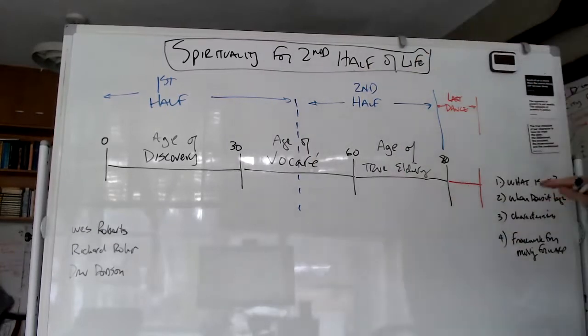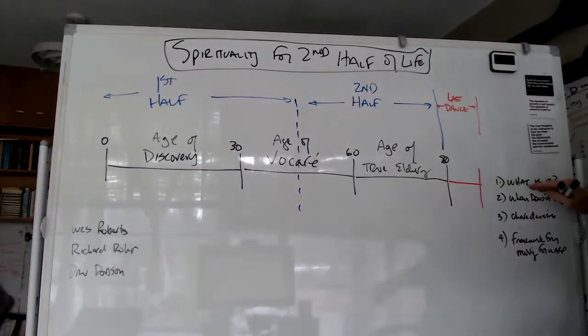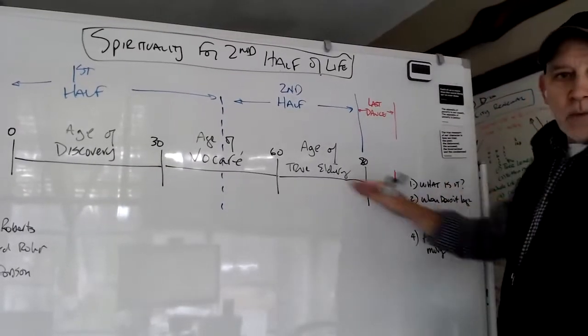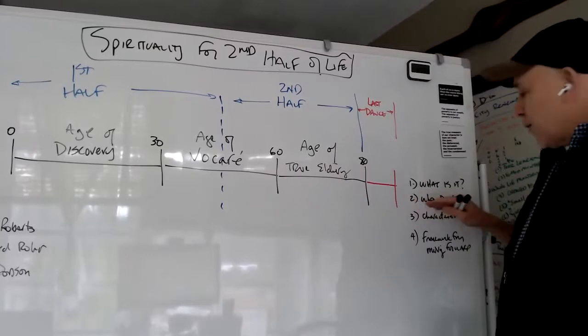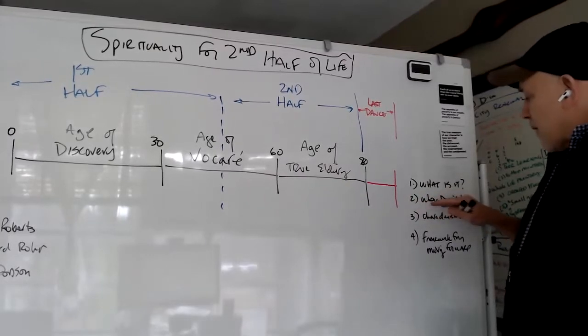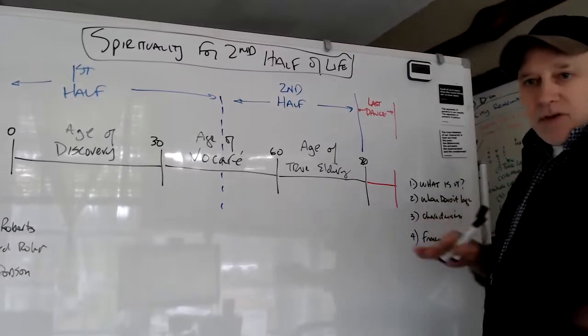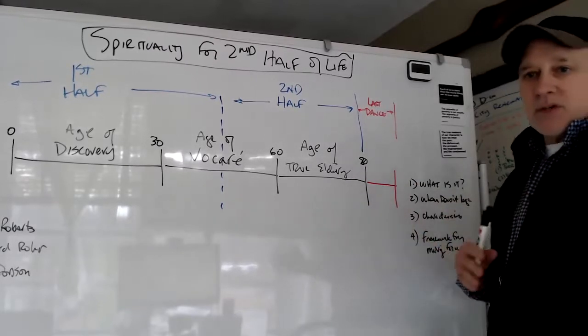And what I want to do is talk about what is it. So I'm going to do that a little bit today and walk through my little diagram here as an initial framework for understanding. Talk about when does it begin? What are the characteristics of this second half or this transition from the first half to the second half of life?